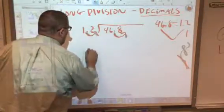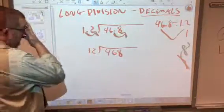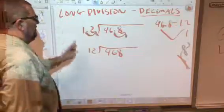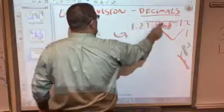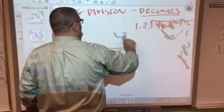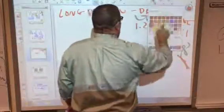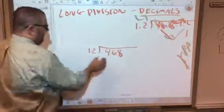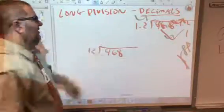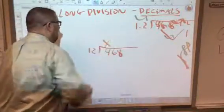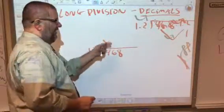Alright, so now we're really doing 12 into 468. So find out, does 12 go into 4? No. 12 doesn't go into 4. I've had some different ways that kids do this. Some people put a 0, some put an X. We'll put an X right here. So 12 does not go into 4. But does 12 go into 46? Yes, it does.